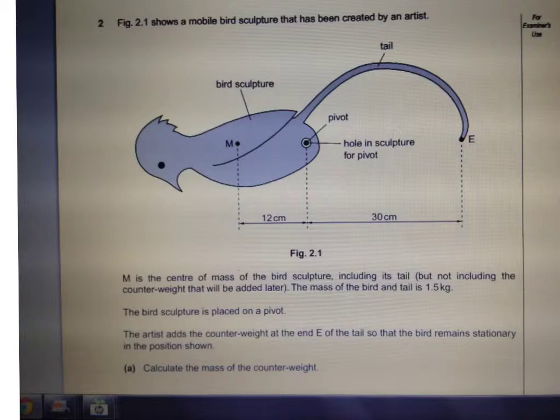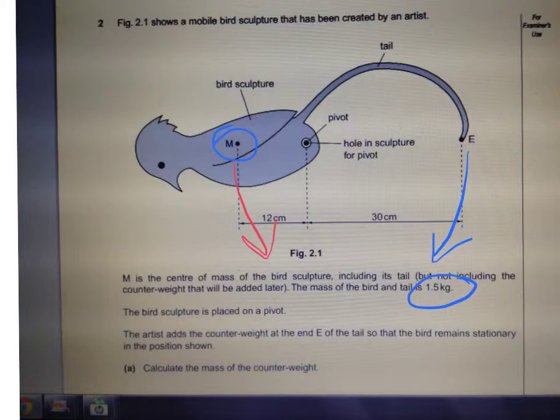So here's your clue for this one, calculating the mass of the counterweight. Your clockwise moment, actually, let's do your anti-clockwise moment. Your anti-clockwise moment is this one, okay? And your clockwise moment is this one. So you've got some distances, you know the mass, that's 1.5, that's this mass. And so hopefully you should be able to set the two moments equal to each other and you should be able to get the answer.